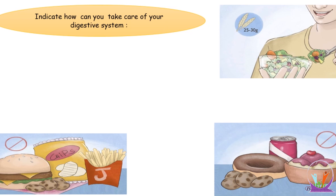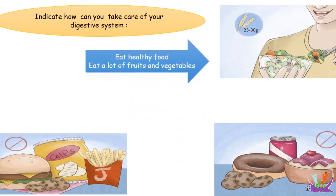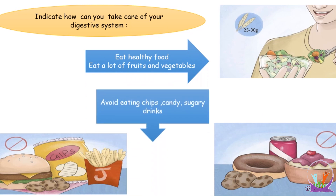You should eat healthy food — eat a lot of fruits and vegetables. You should avoid eating chips, candies, and sugary drinks, as they are unhealthy and not good for your digestive system.